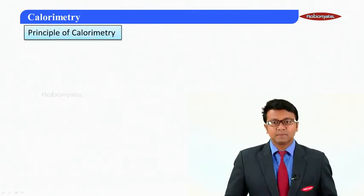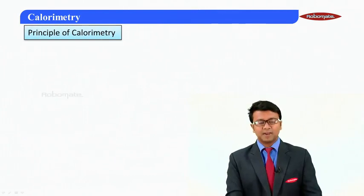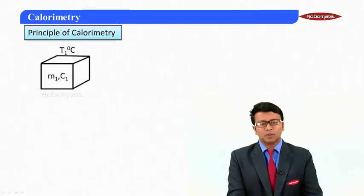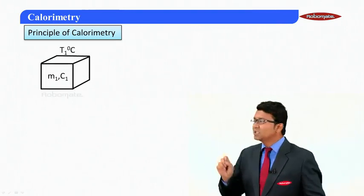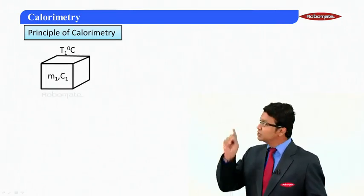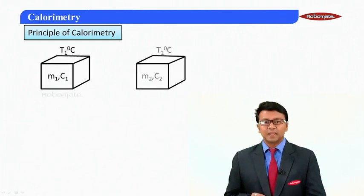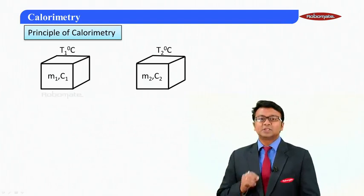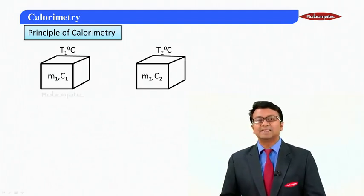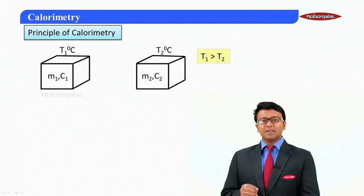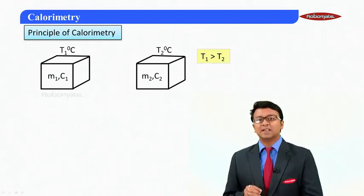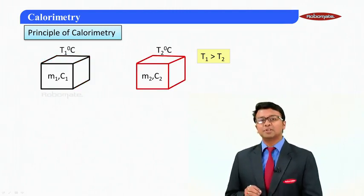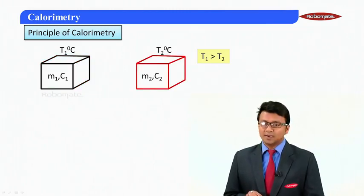Now let's look at the basic principle of calorimetry. Consider a block of mass m₁, specific heat capacity c₁, at temperature T₁°C, and another block of mass m₂, specific heat capacity c₂, at temperature T₂. Given that T₁ is greater than T₂, heat is going to flow from the body at higher temperature to the body at lower temperature.